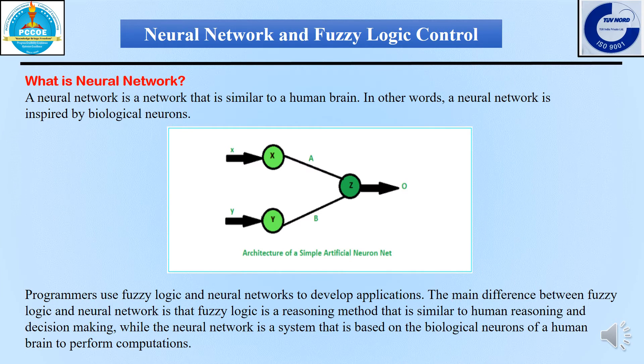Now, what is a neural network? Here, we try to copy the human brain in an artificial way — a neural network is a network which is similar to a human brain. In other words, a neural network is inspired by biological neurons. The difference is that fuzzy logic is a reasoning method similar to human reasoning and decision making, while the neural network is a system based on biological neurons of the human brain to perform computation.